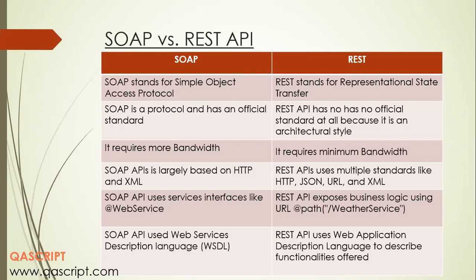SOAP API uses service interfaces like web service. REST API exposes business logic using URLs and paths — generally there will be an endpoint where that particular resource is located on the server, and you can use that endpoint in a URL. SOAP API uses WSDL (Web Services Description Language) to develop its APIs, while REST API uses the Web Application Description Language to describe functionalities. These are the key differences between SOAP and REST APIs.